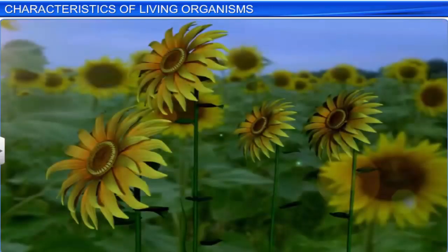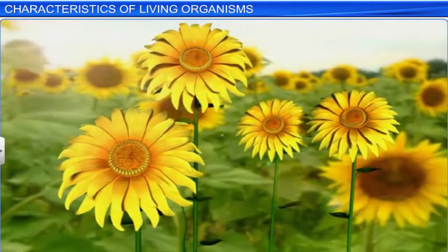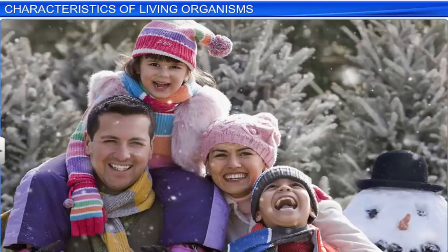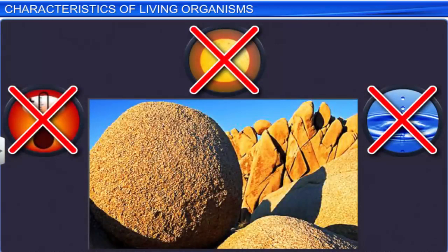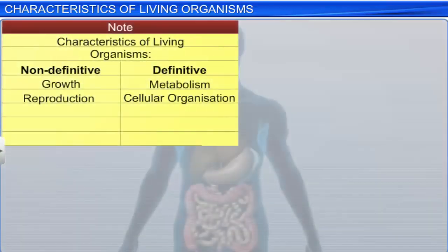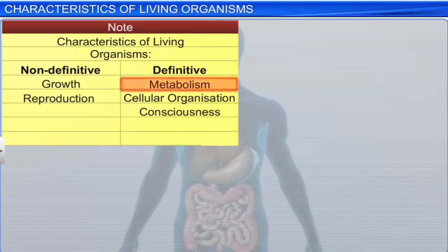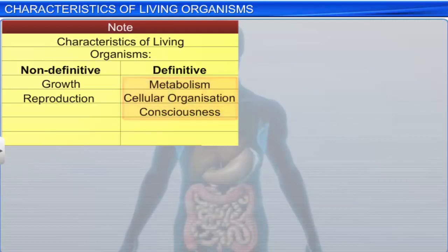For instance, a sunflower always faces the sun. Humans too respond to environmental stimuli, and are aware of their surroundings and themselves. For instance, in winters they wear woolens to keep their bodies warm. Non-living objects don't respond to external stimuli. Consciousness is therefore another definitive characteristic of a living being. Thus, metabolism, cellular organization, and consciousness are the three definitive characteristics of living organisms.